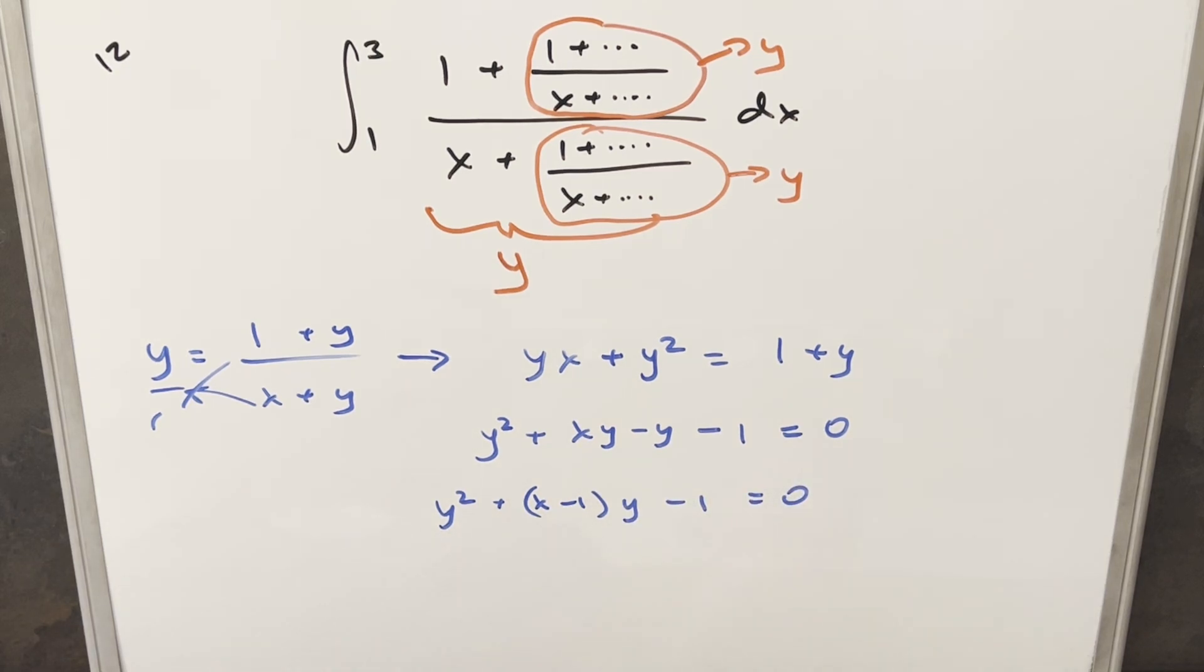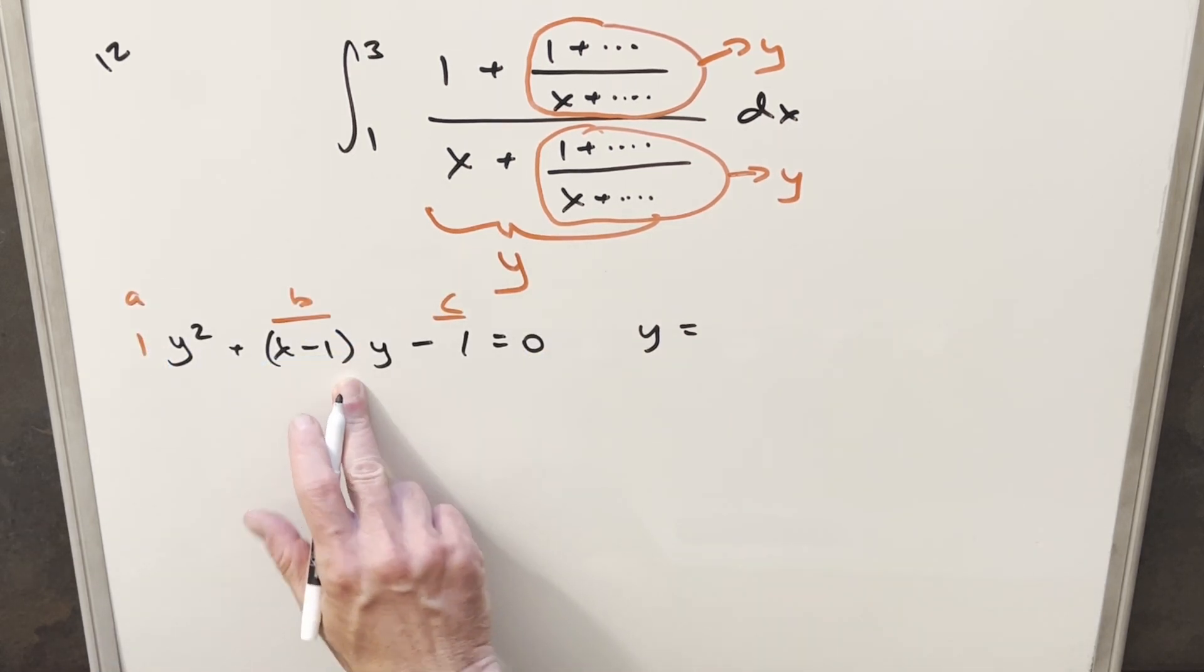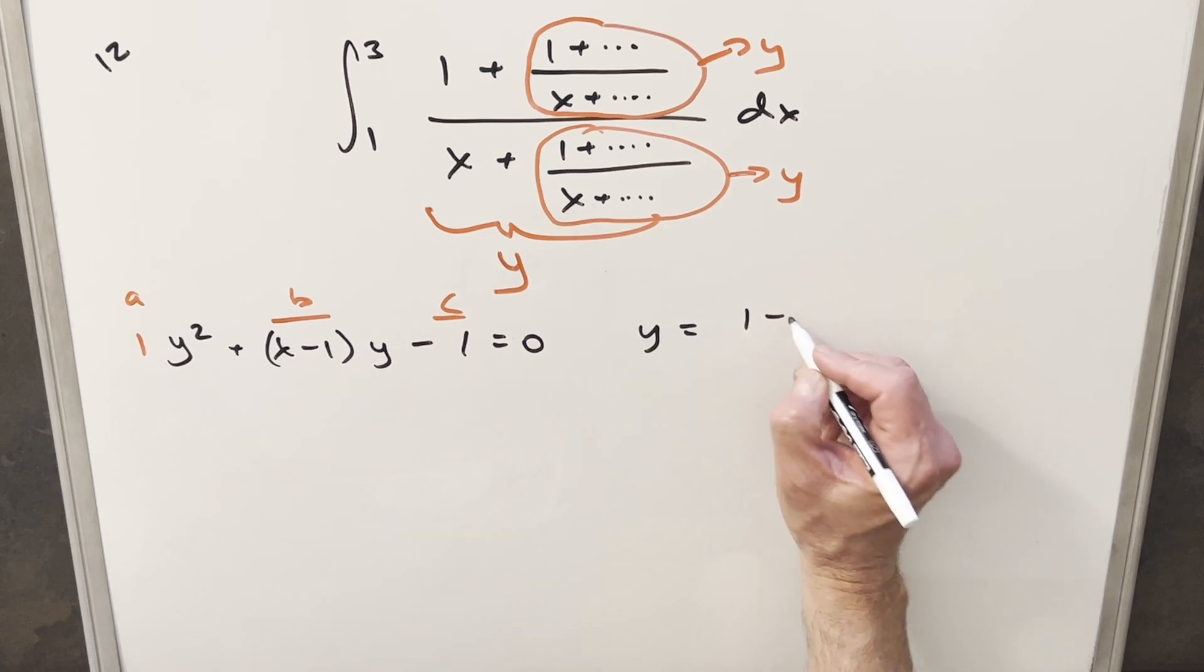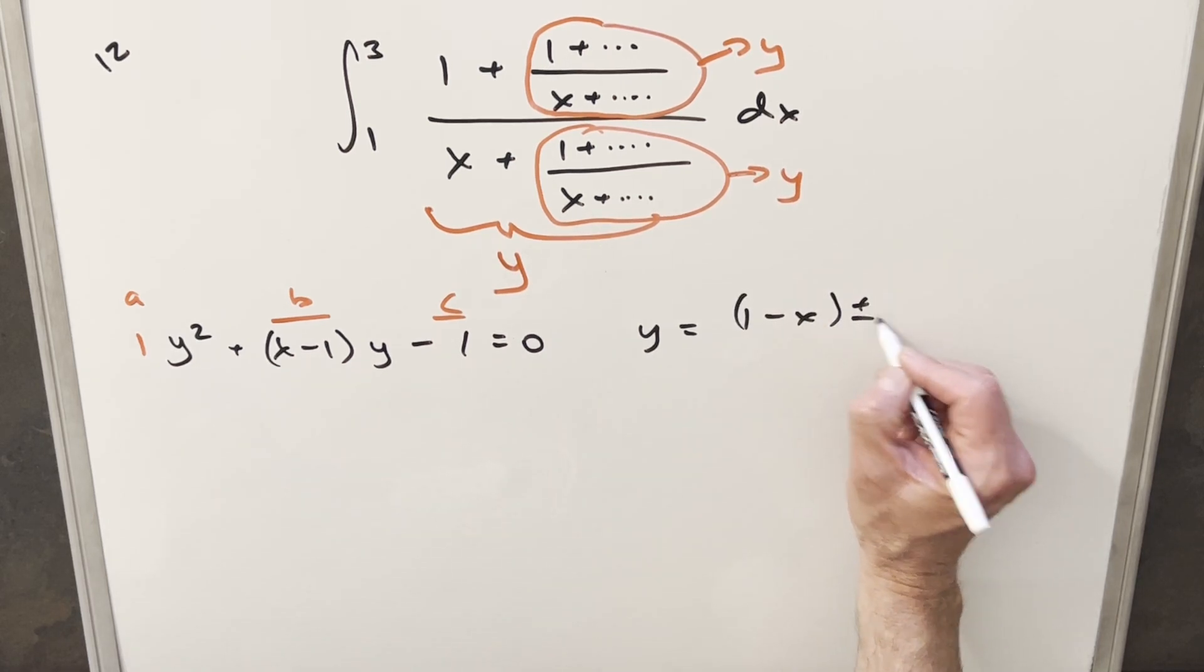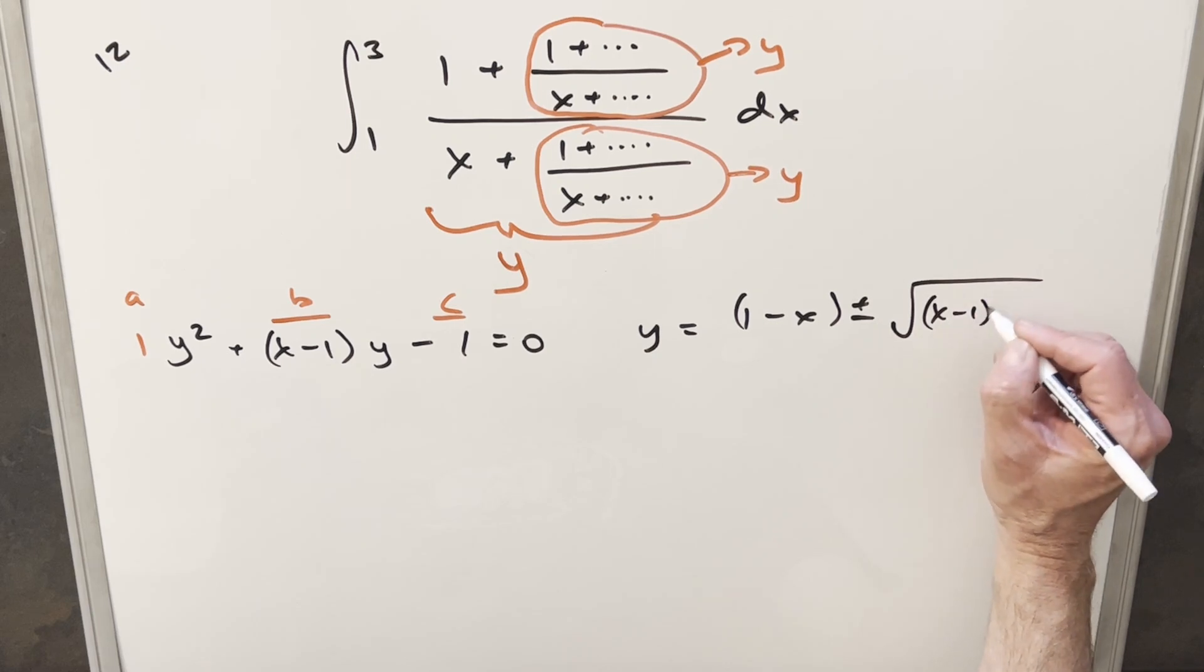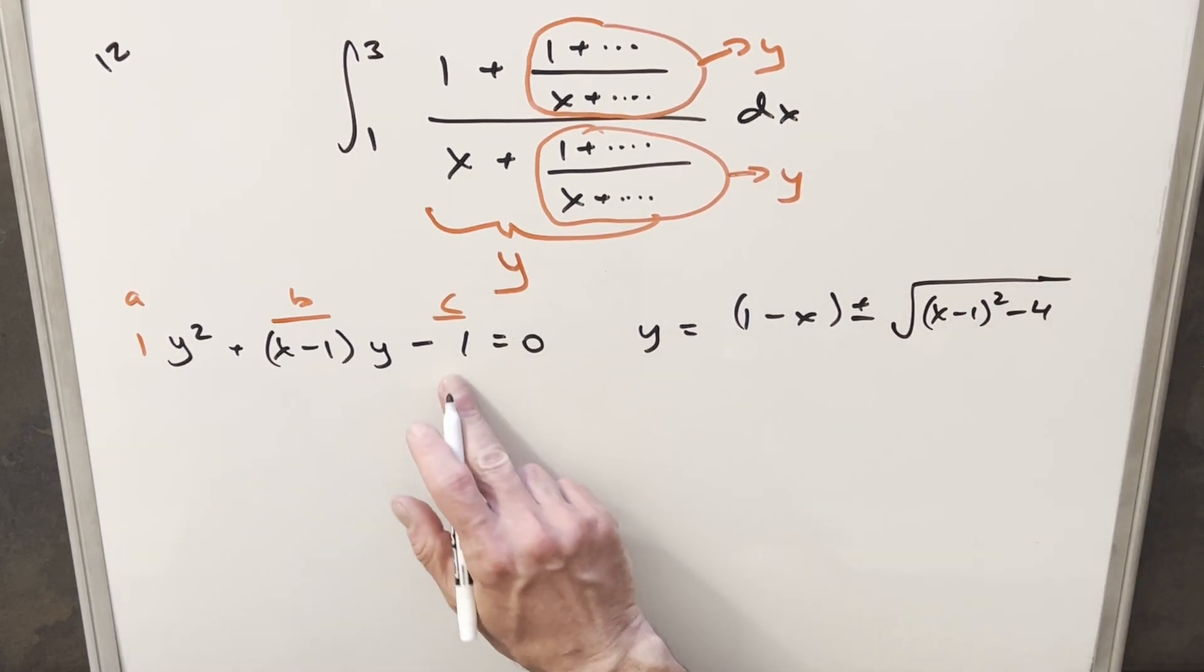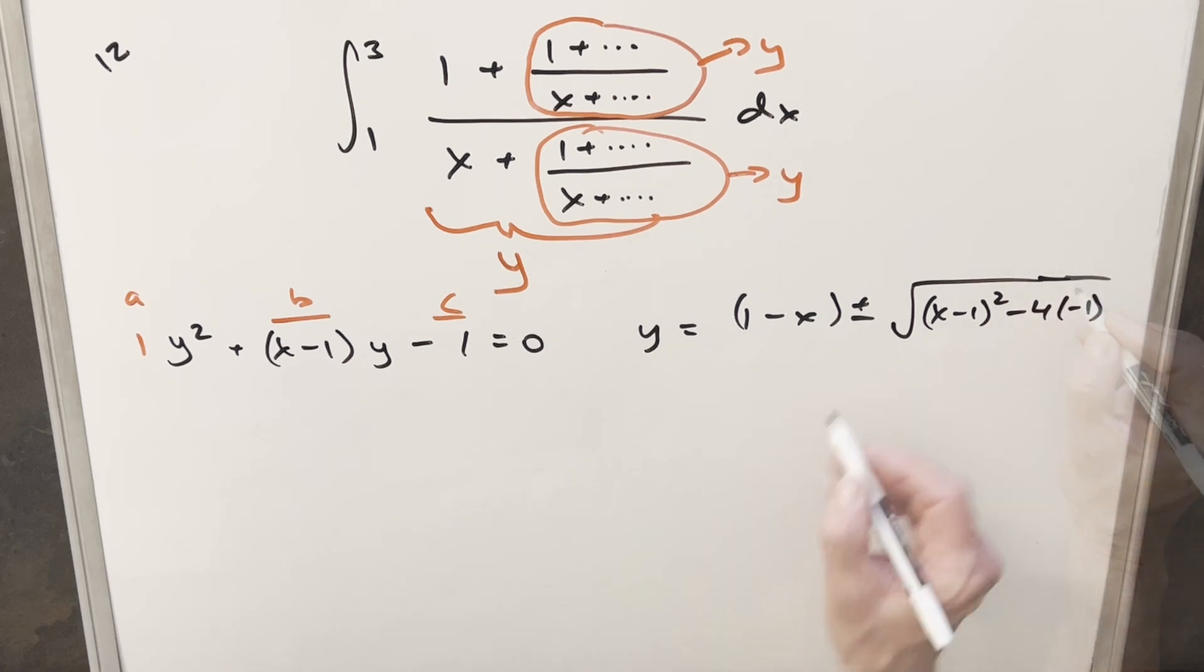And now in order to solve for y, what I can do is use the quadratic formula. We're like, this is going to be our b value right here. This is going to be our c. And our a coefficient over here will just be 1. So coming over here, we'll put together our quadratic formula. So first, we're going to have minus b. So I'm going to write that as 1 minus x over here plus or minus square root b squared. We're going to have x minus 1 squared minus 4. a is just 1. And then our c is going to be minus 1. And then this is all over 2a, which is just going to be 2.